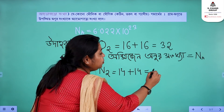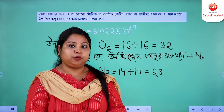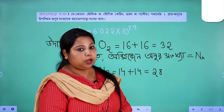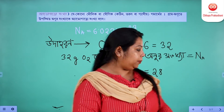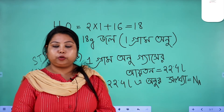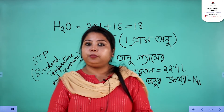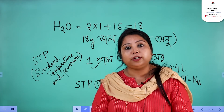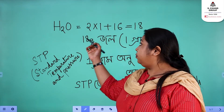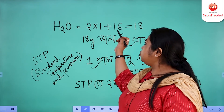So what do we get? In 28 grams of nitrogen, the number of nitrogen atoms will be Avogadro's Number. Now let's discuss molecular substances. Oxygen — one molecule of oxygen has two hydrogen atoms. As you know, atomic mass of hydrogen is 1.